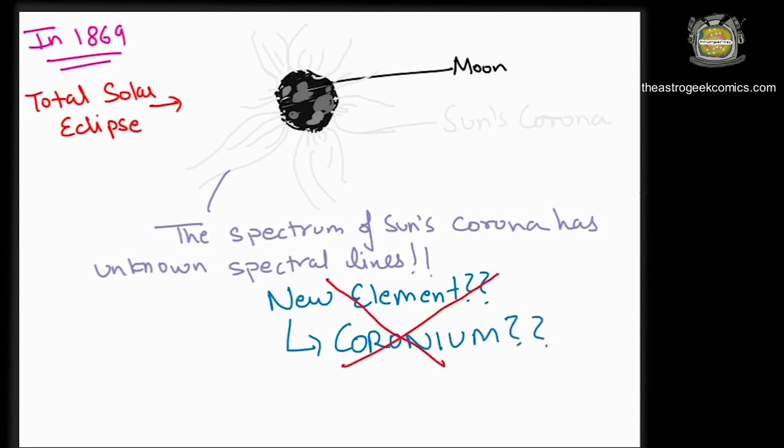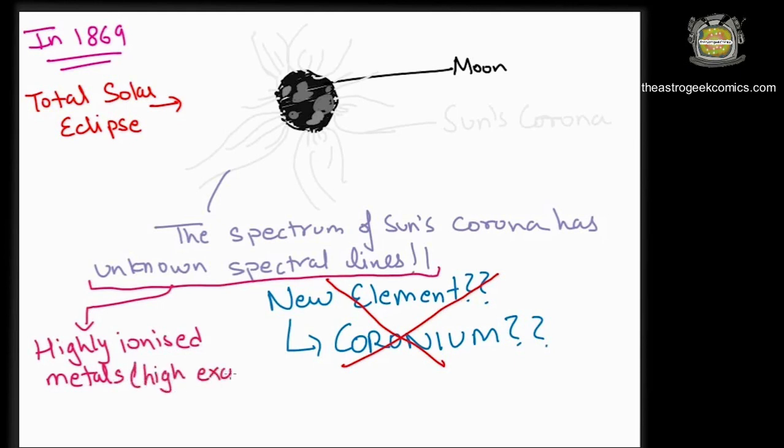Later, it revealed that this line was actually due to the higher or super ionized state of iron which was in the Fe13 plus state which is possible in the high temperatures of the sun's corona which reached up to 3 million degrees Celsius.